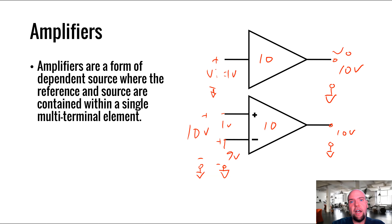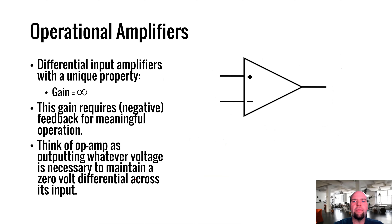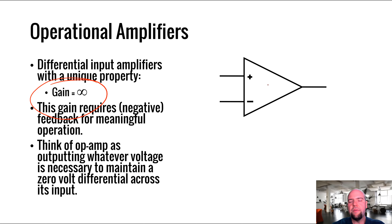Neither of those are the types of amplifiers we're going to talk about in this class. We're going to talk about a special type called an operational amplifier. An operational amplifier is a type of differential input amplifier, but it has a unique property: its gain is infinite. So it takes the voltage difference between the terminals, multiplies it by infinity, and that's the output voltage.